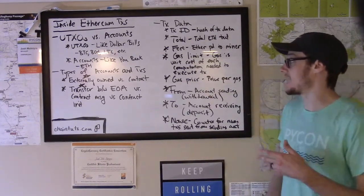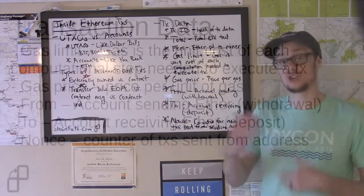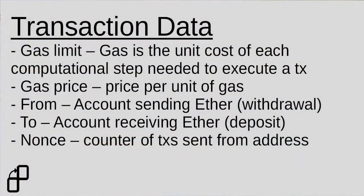The gas price is the amount of Ether spent for each unit of gas used to do the computation. The 'from' field is the account sending the Ether in the transaction, and it behaves like a withdrawal on a bank account — when the block with this transaction is processed, the state of the sending account will change to have a reduced Ether balance.